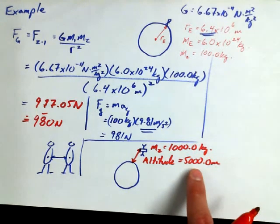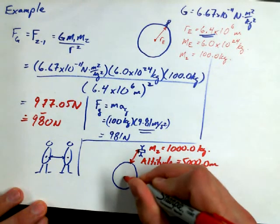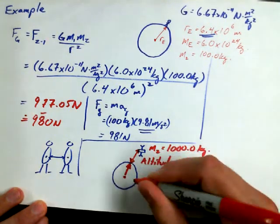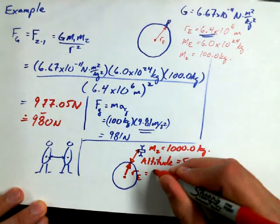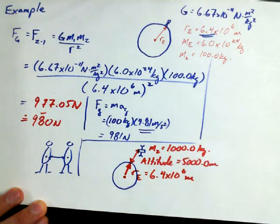Do I just put, do I put 5,000 in as my R value? You have to add it to the radius of the Earth that we've already determined. You're right. Well, we didn't determine it, it was given to us, right? But, yeah, we could use the radius of the Earth, which we were given earlier as 6.4 times 10 to the power of 6 meters. We could use the altitude.